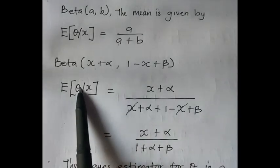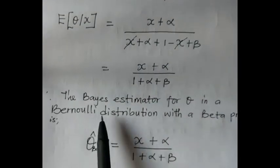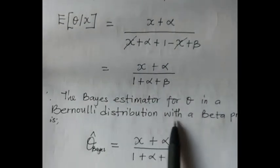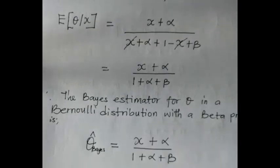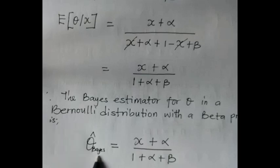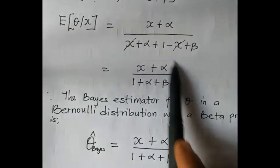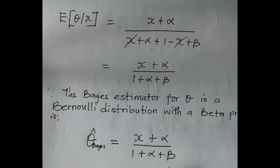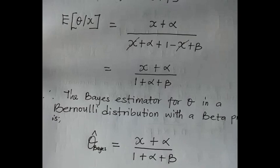When we substitute and simplify, X cancels X, giving us the expected value (X + α)/(1 + α + β). This is our Bayes estimator for theta in the Bernoulli distribution, and that is the answer to the problem.